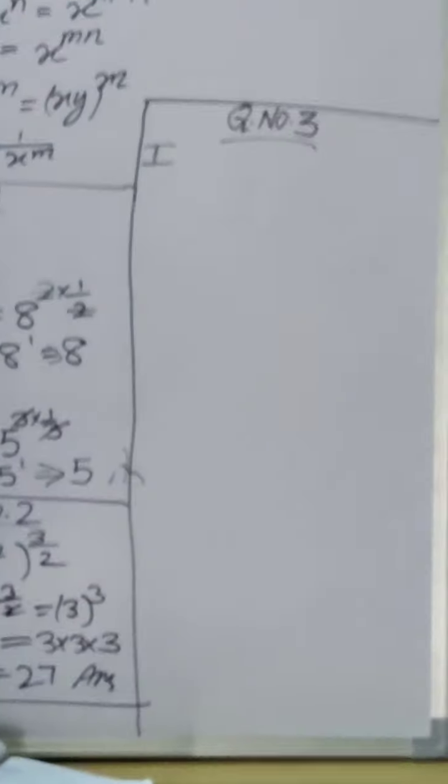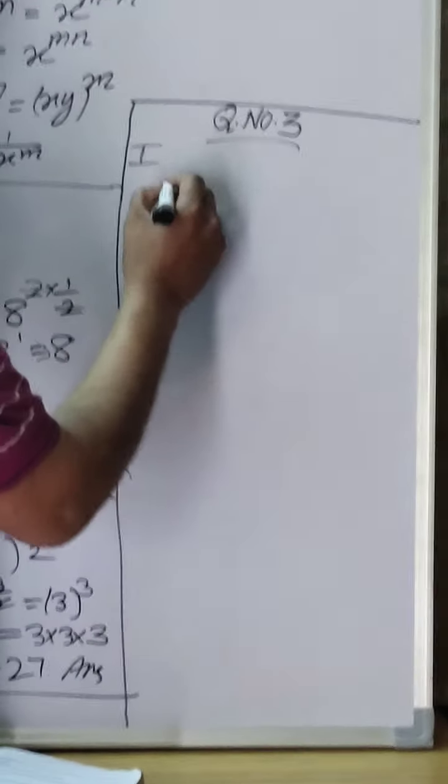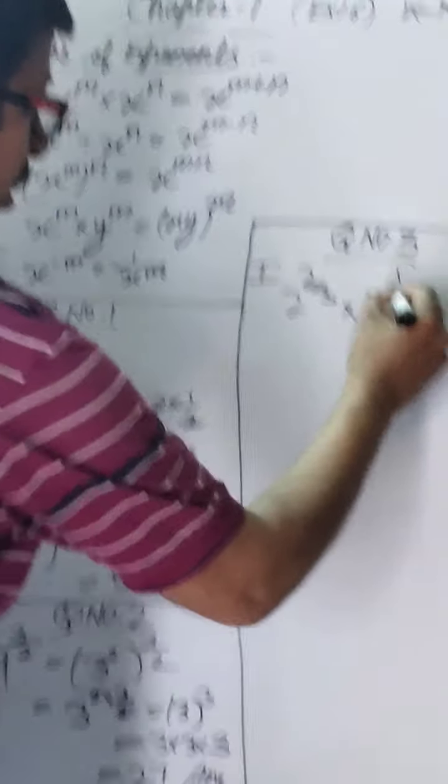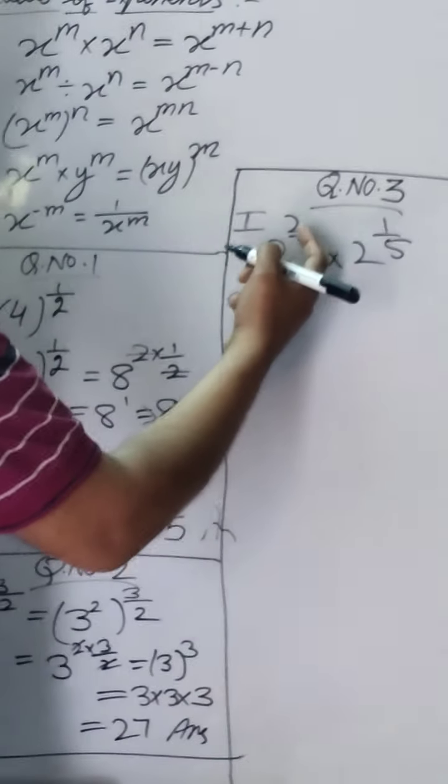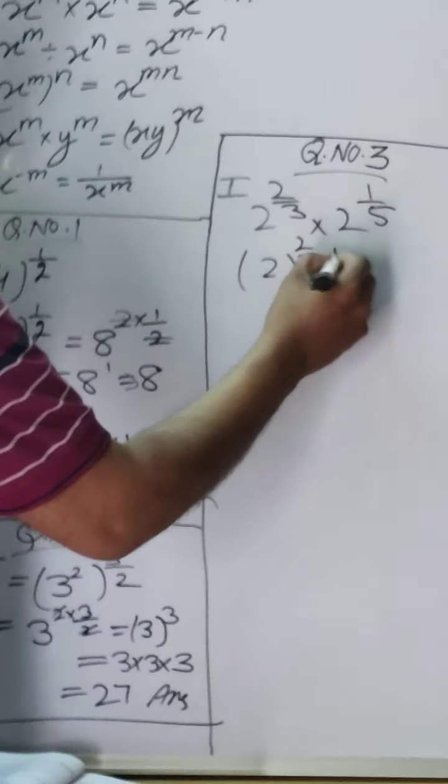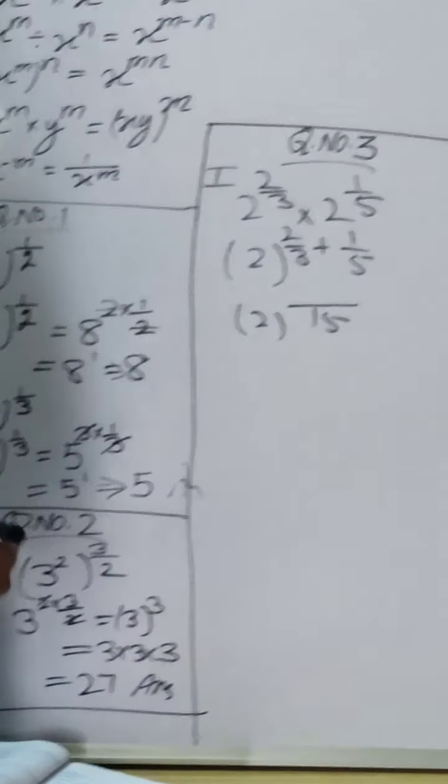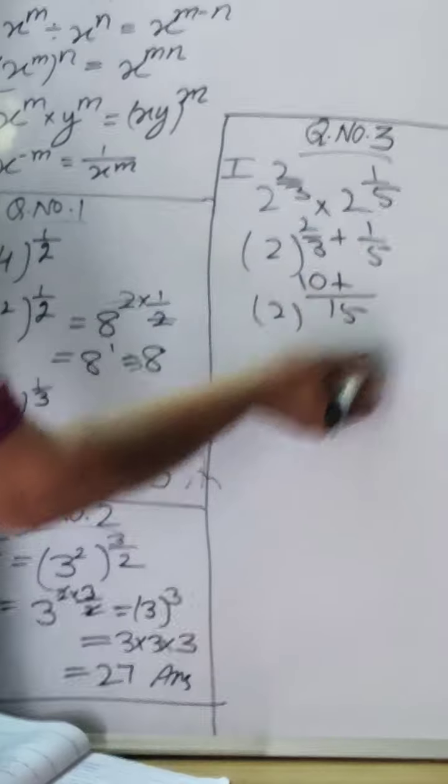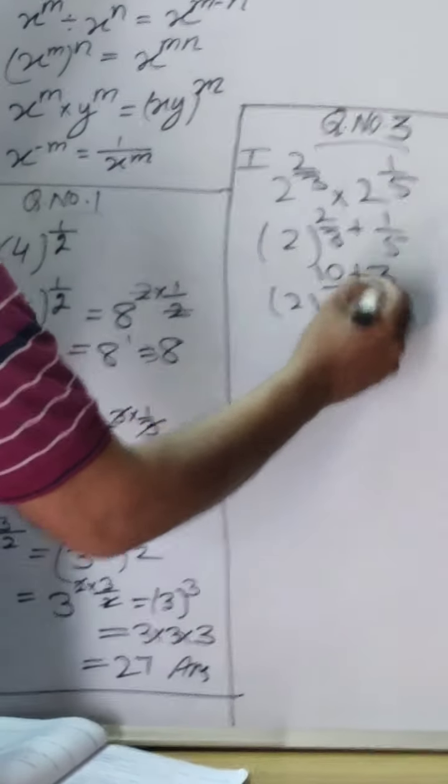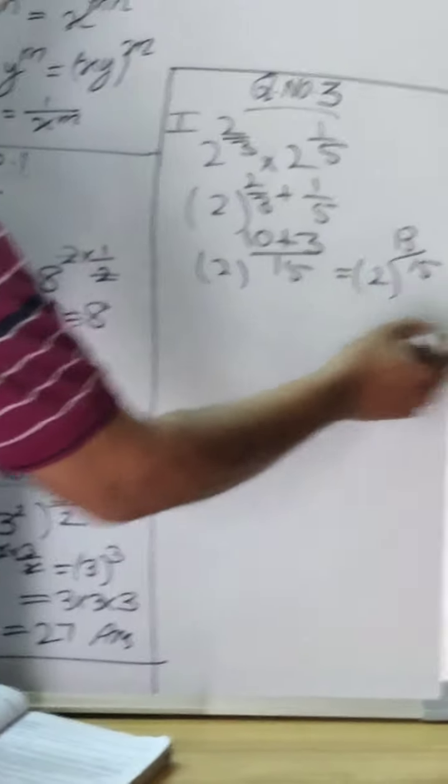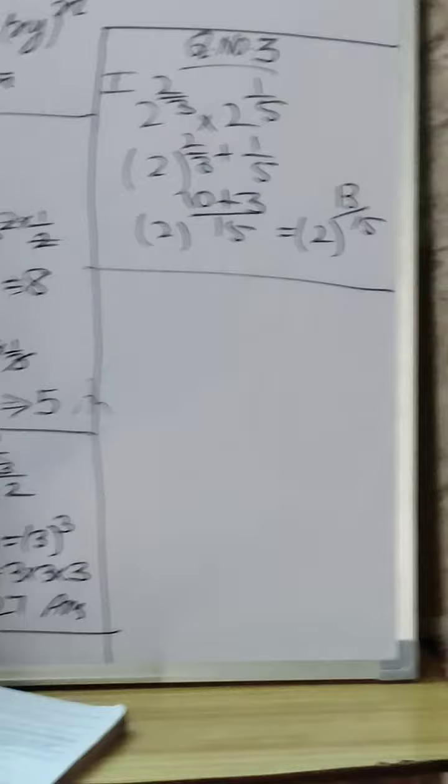So question number 3, very important. First part is 2 power 2 by 3 into 2 power 1 by 5. Here you see, base is same, then powers will add. So 2 power 2 by 3 plus 1 by 5. Taking LCM 15, it becomes 2 power 13 by 15.